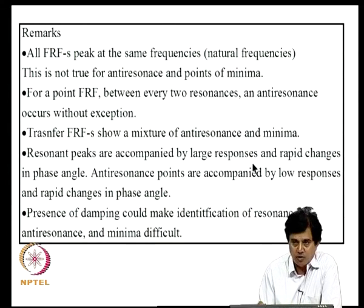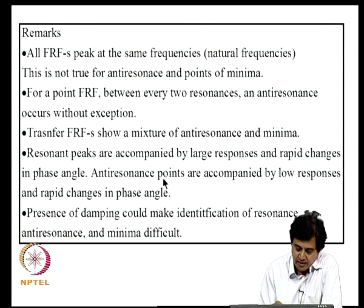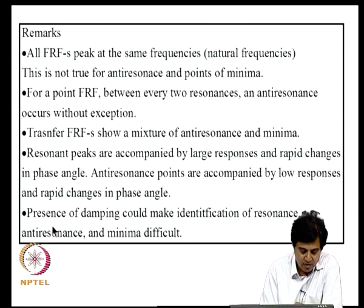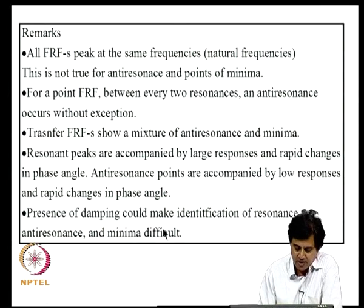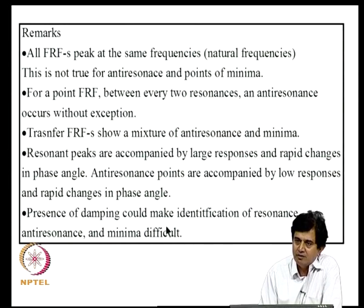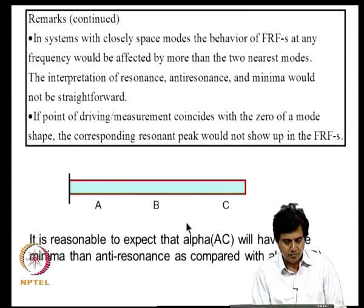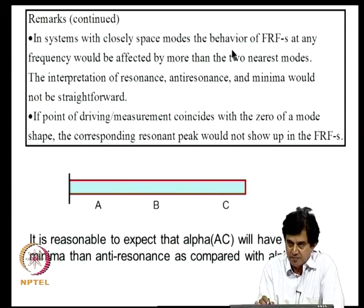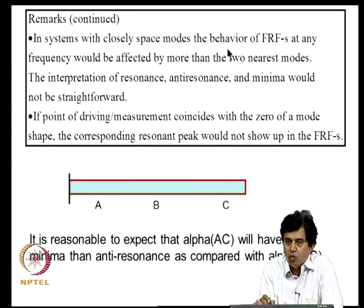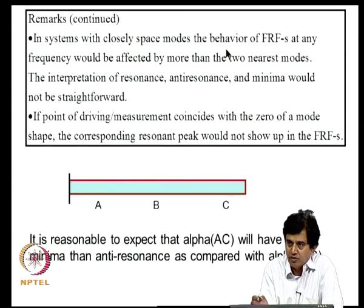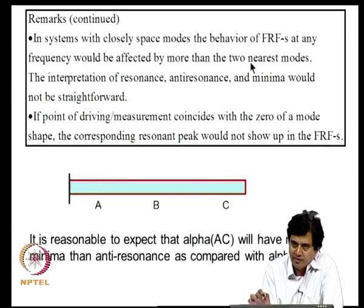Several observations follow: all FRFs peak at the same frequencies (the natural frequencies), but anti-resonance and minima locations vary because they depend on mode shapes as well as natural frequencies. For point FRFs, anti-resonances and resonances alternate without exception. For transfer FRFs, a mixture of anti-resonances and minima appears. Resonant peaks are accompanied by large responses and rapid phase changes. If damping is large, modal bandwidths increase and contributions from neighboring modes blur the peaks, anti-resonances, and minima. Similarly, closely spaced modes alter this behavior.